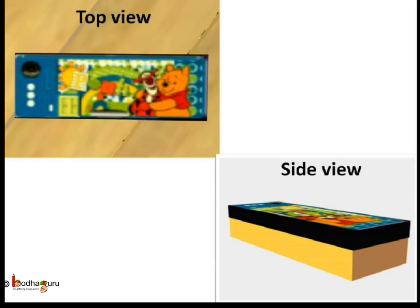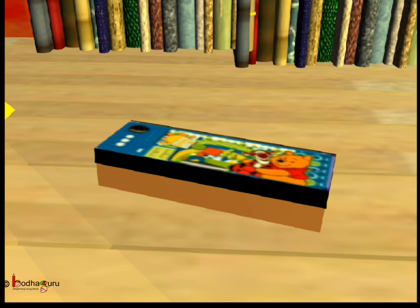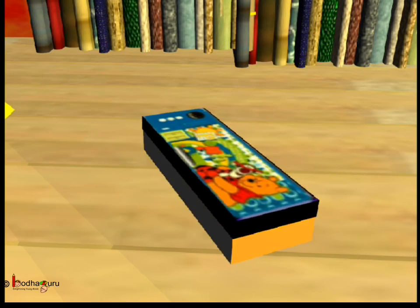If you look at a pencil box from different sides, it would look different. Can you tell what it is? It's a car — it's a top view of a car. So an object may look different if we see it from different sides.